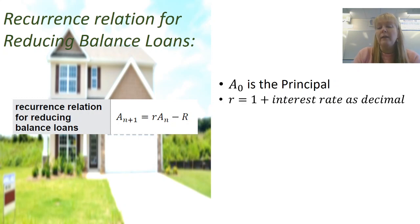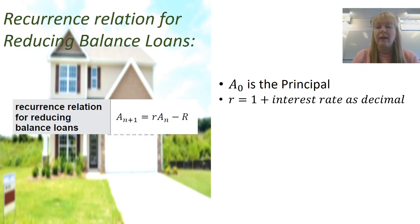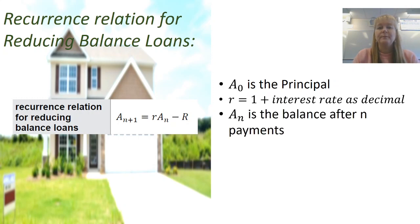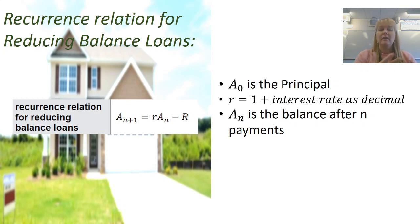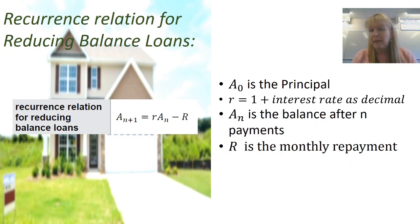R is equal to 1 plus the interest rate as a decimal — you would have been used to seeing that in the compound interest formula in brackets. Here in the recurrence relation we have 1 plus I equal to the rate R, and we need to remember to always convert that to a decimal first. Aₙ is our balance after N payments. So if I was looking at the value at the end of year 3, that would be N+1 equals 3 — I take the balance at the end of year 2, multiply it by the interest charged, and then subtract a repayment. Capital R is that monthly repayment. When we unpack it with numbers, it'll make a lot more sense.